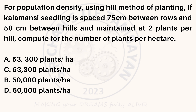For population density using the hill method of planting, if calamansi seedling is spaced 75 cm between rows and 50 cm between hills and maintained at 2 plants per hill, compute for the number of plants per hectare. A. 53,300 plants per hectare. B. 50,000 plants per hectare. C. 63,300 plants per hectare. D. 60,000 plants per hectare.